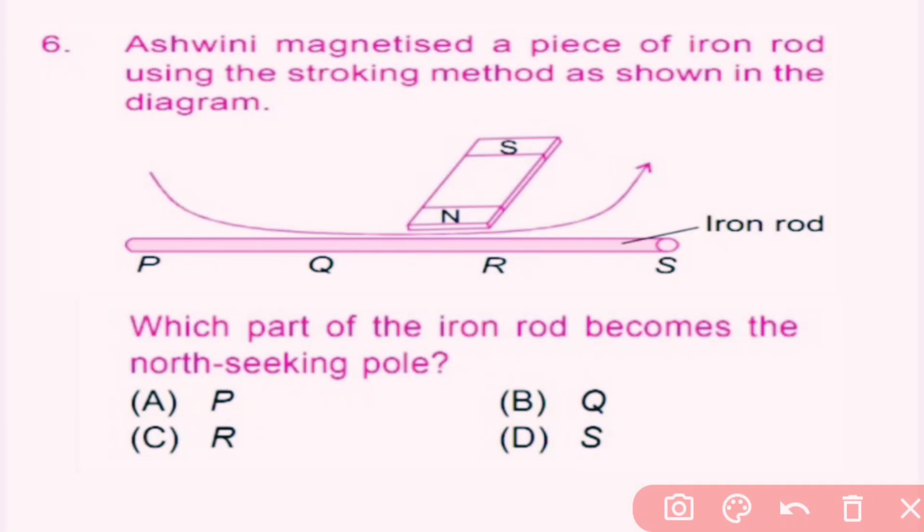During the stroking method, the end from which the process starts develops the same polarity as the polarity of the stroking magnet. So it starts from this direction, so Q will become the north-seeking pole. Here, B is the correct answer.